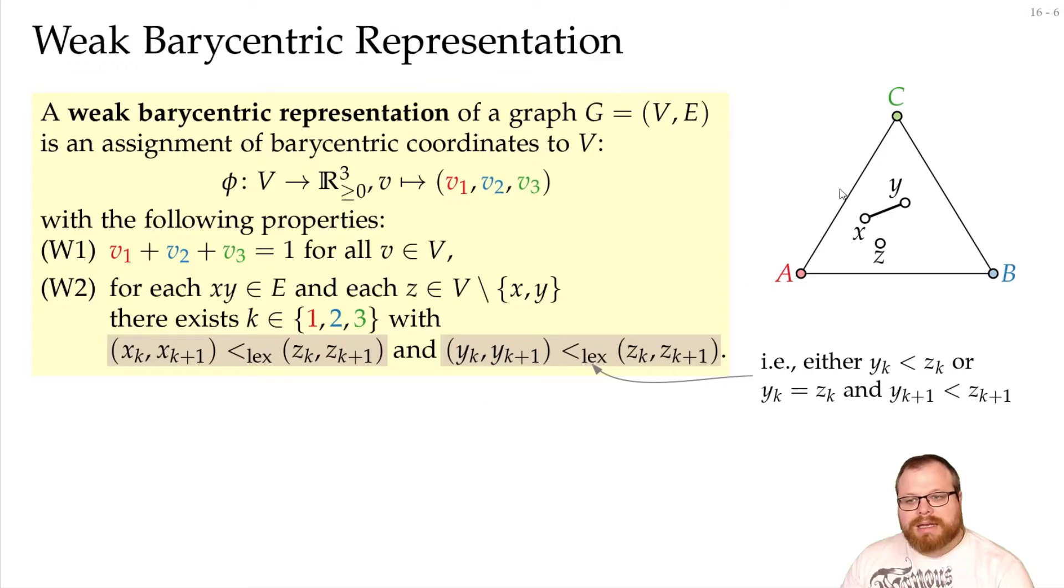So they can lie on the same line as here. So z_1 here is larger than y_1, and z_1 is exactly the same as x_1, but it is closer to b, so z_2 is larger than x_2. That means lexicographically this is still larger.